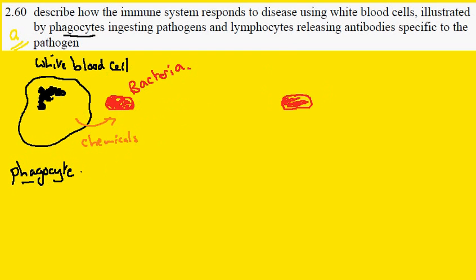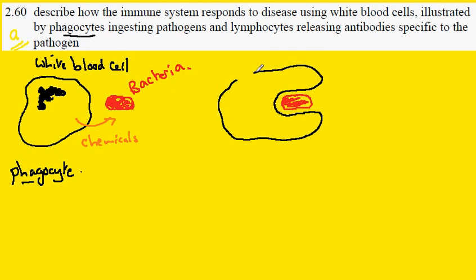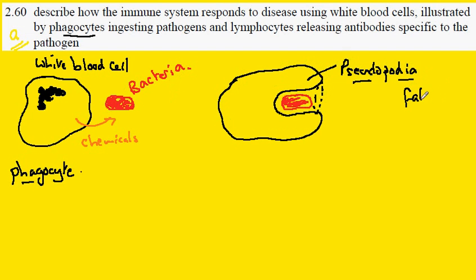What happens is that the chemical stimulus causes the cell to extend itself around the bacterial cell. We have to think three-dimensionally for this process. These extensions are called pseudopodia — 'pseudo' meaning false and 'podia' meaning foot — and they extend around the bacteria.